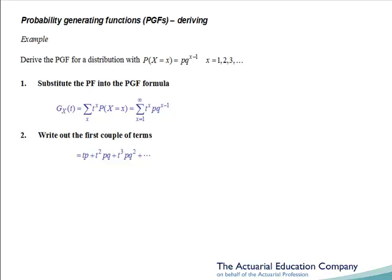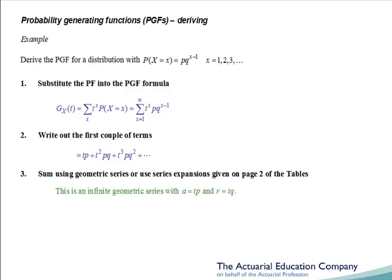Our final step is to sum this using either geometric series or the standard series expansions given on page 2 of the tables. We can see that in this case we have an infinite geometric series, with first term a equal to tp and common ratio r equal to tq. Recall that the sum of an infinite geometric series is a over 1 minus r, so we'll have tp over 1 minus tq. The summation is only defined if the common ratio is between minus 1 and 1, so we require tq between minus 1 and 1, or equivalently t between minus 1 over q and 1 over q.